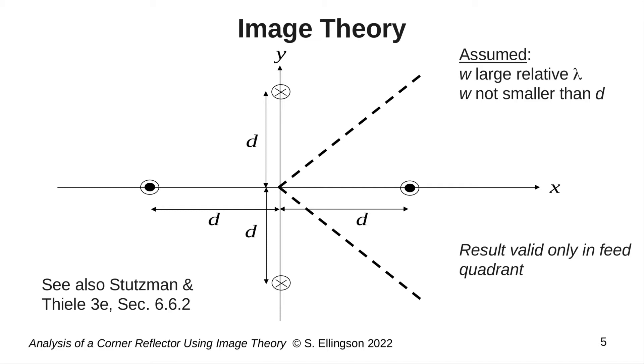The line source at y equals plus D stands in for reflection from the upper plate. Similarly, the line source at y equals minus D stands in for reflection from the lower plate. The line source at x equals minus D stands in for double reflections, that is, cases where the radiation from the feed is first reflected from one plate and then the other plate. This modeling of double reflections is also why the direction of current is opposite that of the other two line sources.